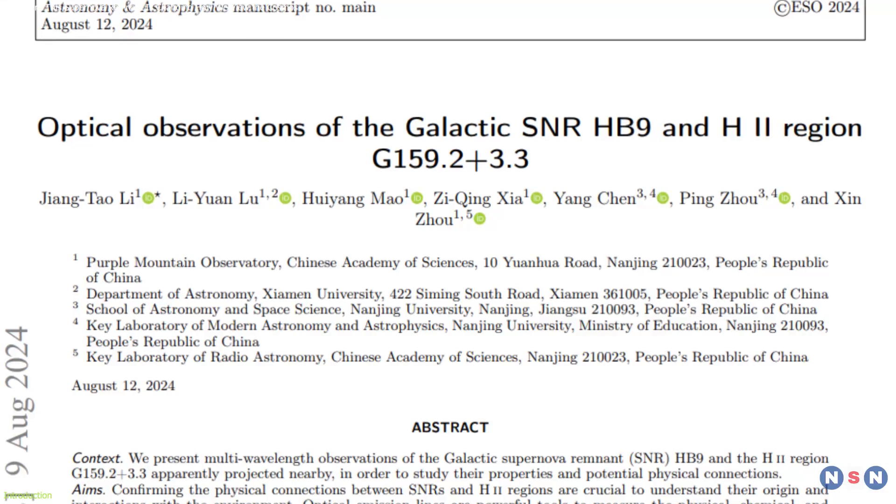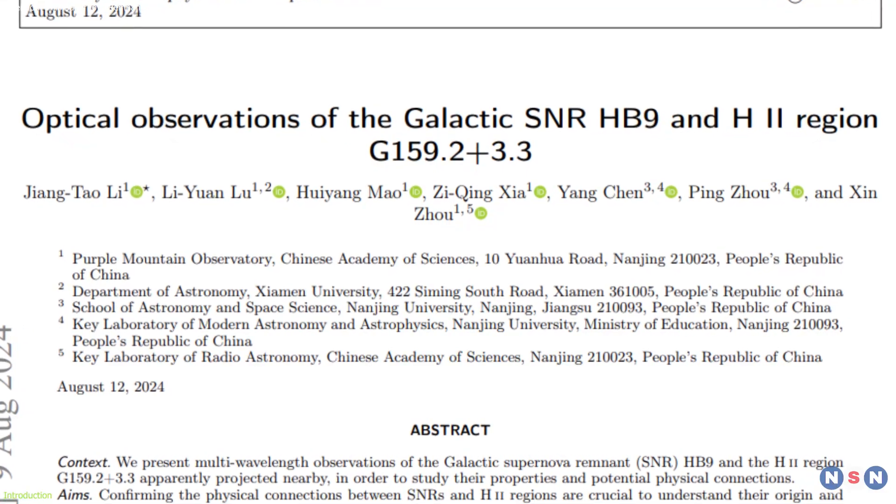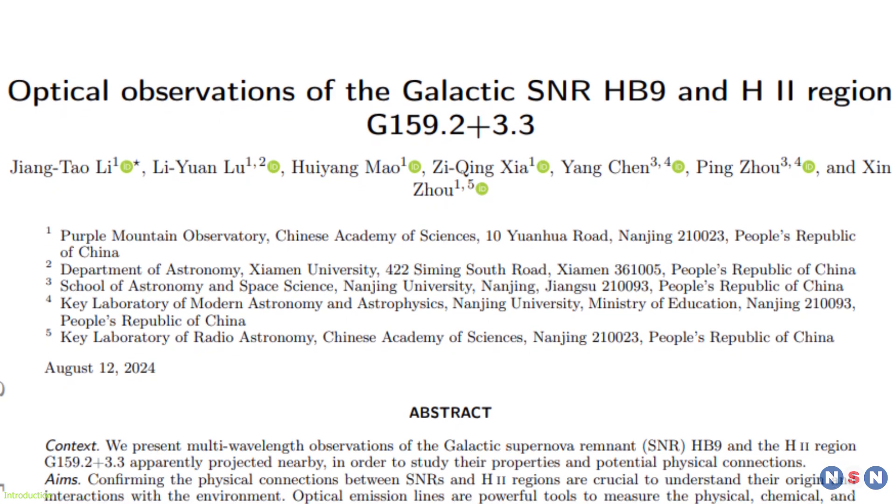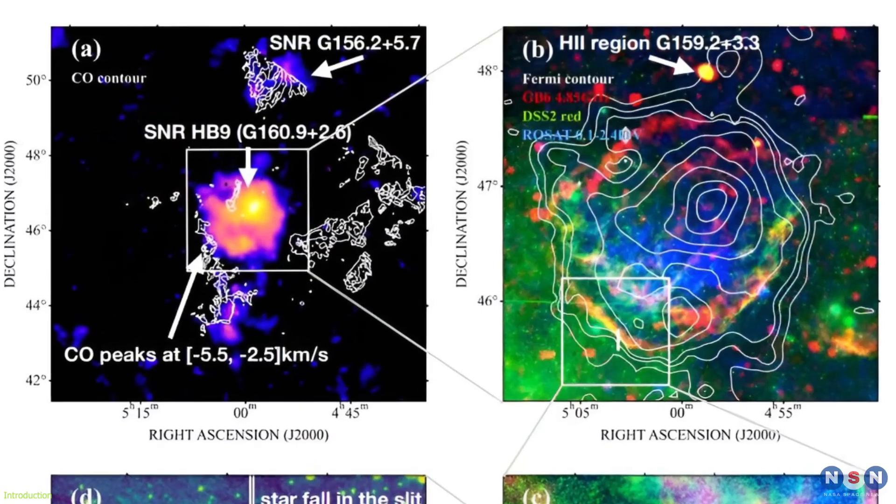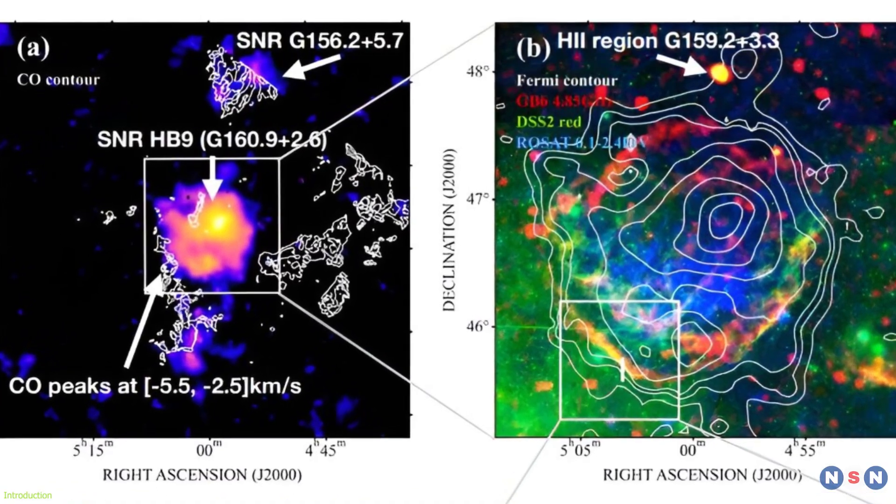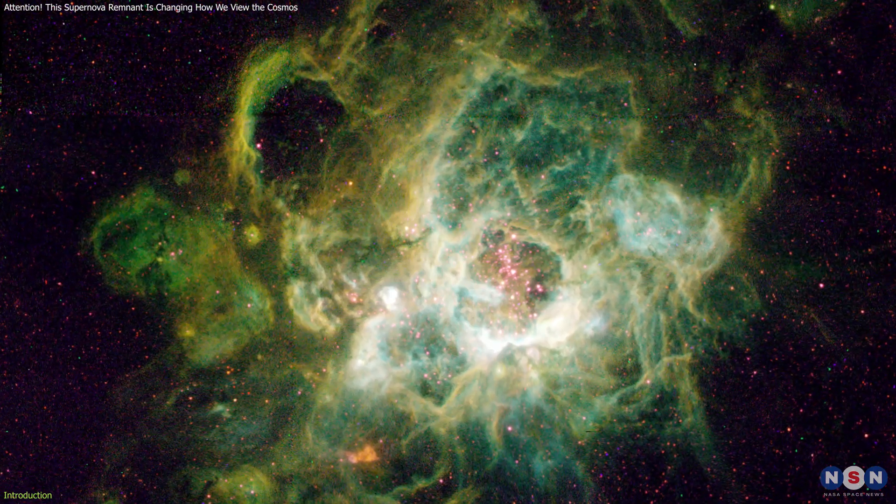One such remnant known as Hb9 has caught the attention of astronomers. Recently, Chinese scientists have conducted a fascinating investigation into the potential connection between Hb9 and a nearby region of ionized atomic hydrogen known as the H2 region.